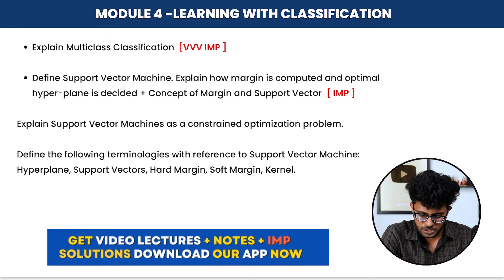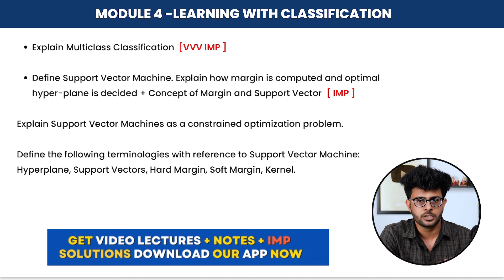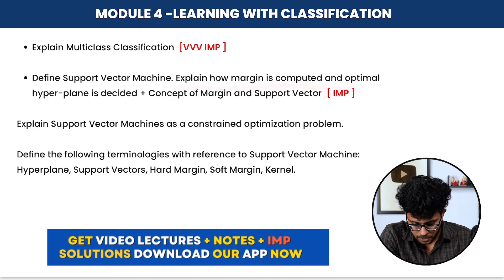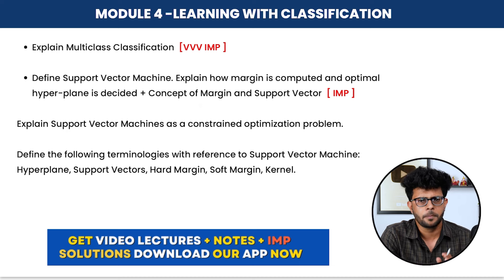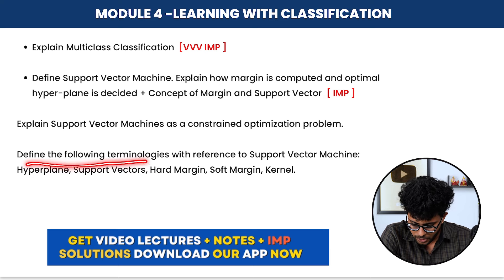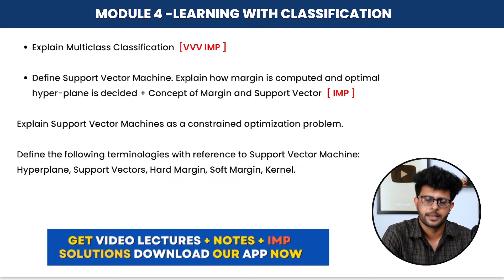Module 4: Multi-class classification is a very important question. SVM is also a big part — questions include: define support vector machine, explain how margin is computed and how the optimal hyperplane is decided. Also: explain SVM as a constraint optimization problem, and define key SVM terminology — hyperplane, support vector, hard margin, soft margin, and kernel.